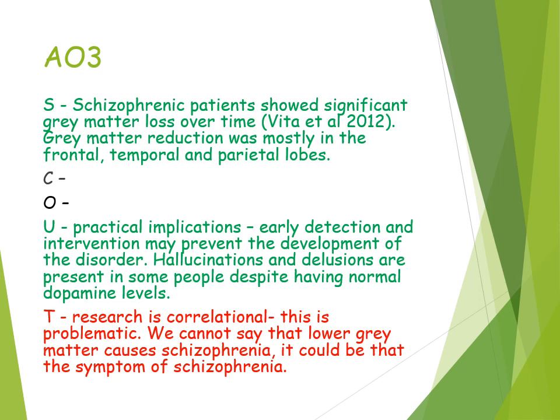There are also issues surrounding the testability of this theory. Research is correlational, which is problematic — we can't say that lower grey matter causes schizophrenia because we can't establish a causal relationship. A reduction in white and grey matter could be a consequence and symptom of schizophrenia rather than its cause. Therefore, abnormal neural correlates might not be a valid explanation of schizophrenia.